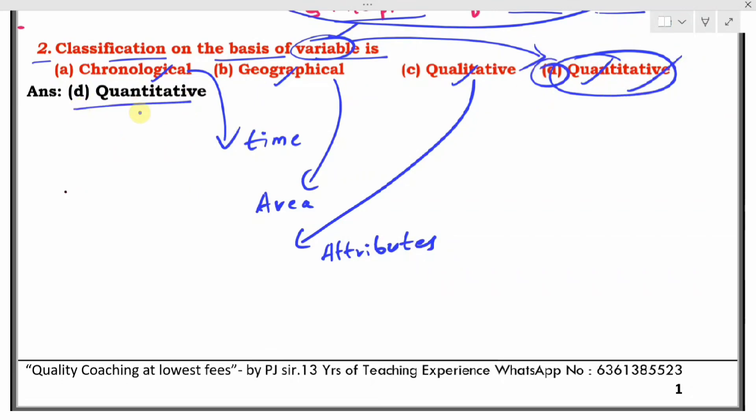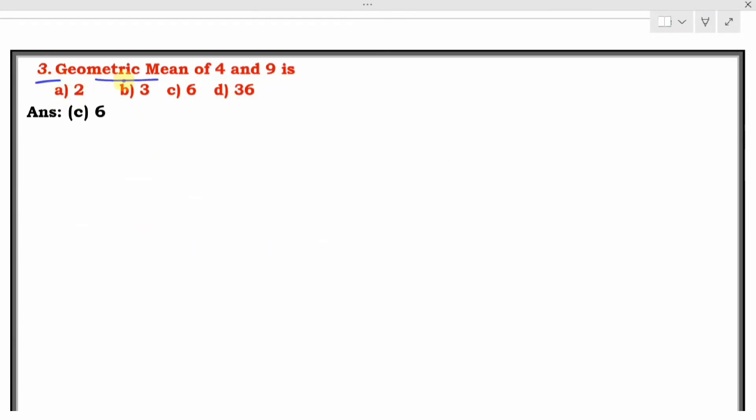Third question: Geometric mean of 4 and 9 is? When two numbers are given, the geometric mean formula is square root of a times b. So square root of 4 multiplied by 9 equals square root of 36, which equals 6. The answer is option C, 6.